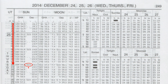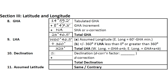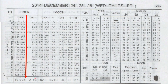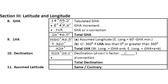We see this gives us a value of 23 degrees south and 23.1 arcminutes. We note this on the site reduction form. We also need to find our decorrection factor, which for the sun is located at the bottom of each of the daily pages. We see here the value is 0.1 arcminutes. We note this on the site reduction form.